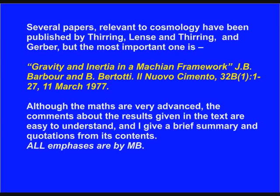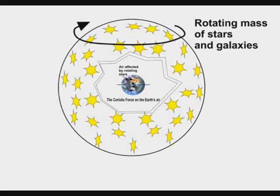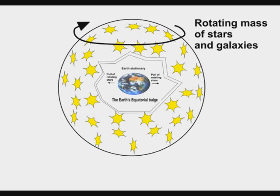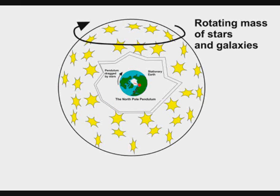They examined mathematically the case of a solid stationary object — that is, the Earth — at the centre of a hollow sphere — the stars — rotating around it. They found that it produced the same effects upon the sphere as we experience on this Earth: the Coriolis forces on the air that produce cyclones and anticyclones in the North and South hemispheres, the equatorial bulge of the Earth's equator, the dragging of a free pendulum — all these are given as proof of the heliocentric model, but they are also generated by the rotating stars in the geocentric model.